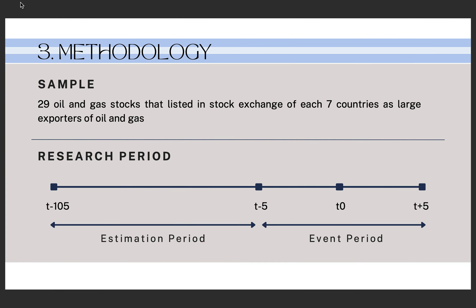In this research, there are 29 stocks of samples that will be used. These stocks are listed in seven countries as large oil exporters. The countries are Saudi Arabia, United States of America, Canada, United Arab Emirates, Nigeria, Kuwait, and Norway.